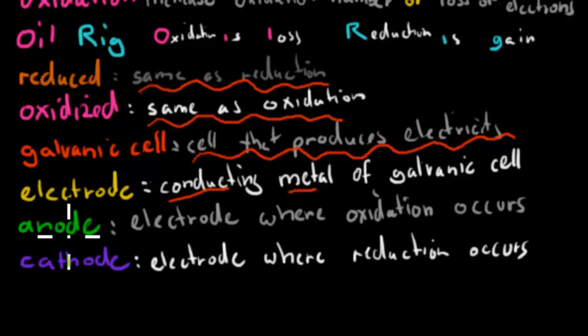We had anode, which was the electrode where oxidation occurs. So where the metal itself loses electrons. That's in the anode. And a cathode was the electrode where reduction occurs. So that was the electrode where the actual metal gains electrons.